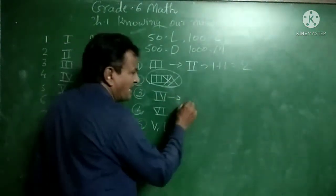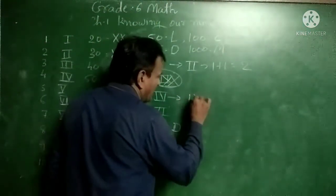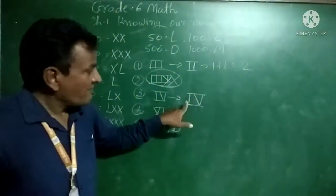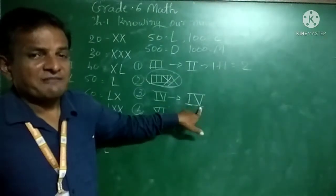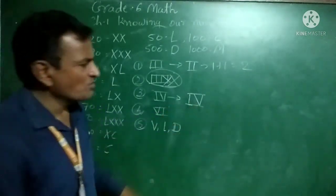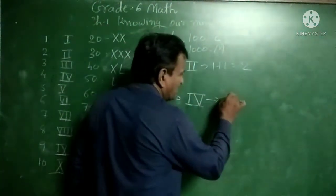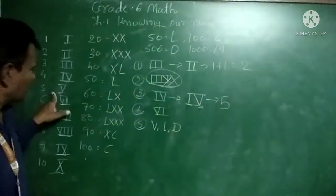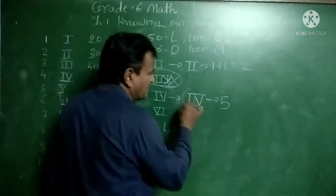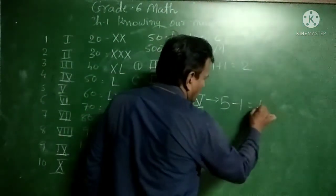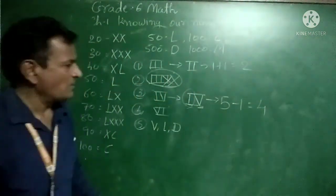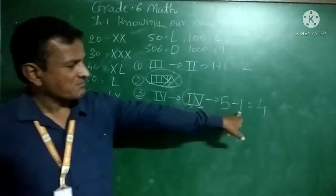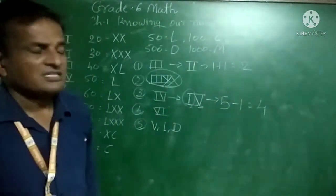Next rule: when a smaller symbol is written on the left side of a greater symbol, the smaller symbol is subtracted. For example, IV — V is 5 and I is 1, so 5 minus 1 equals 4. Therefore we write IV for 4.